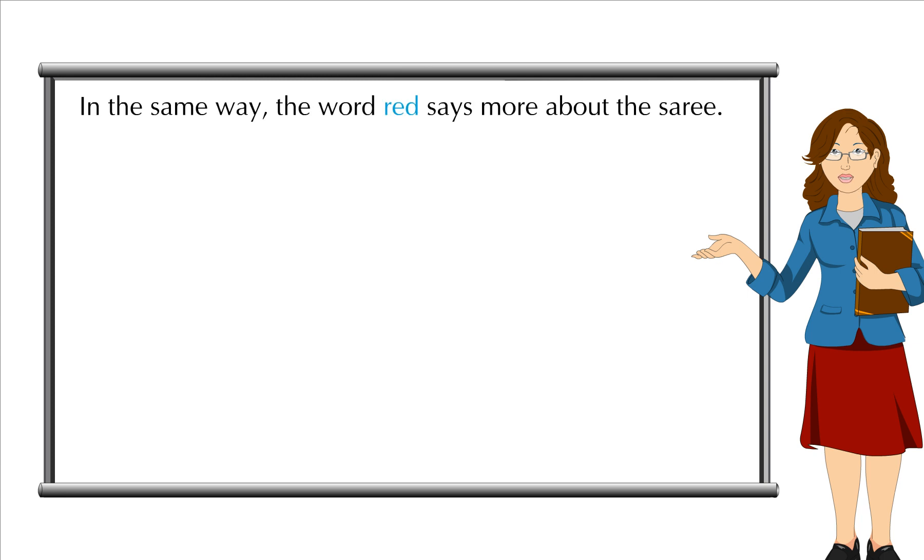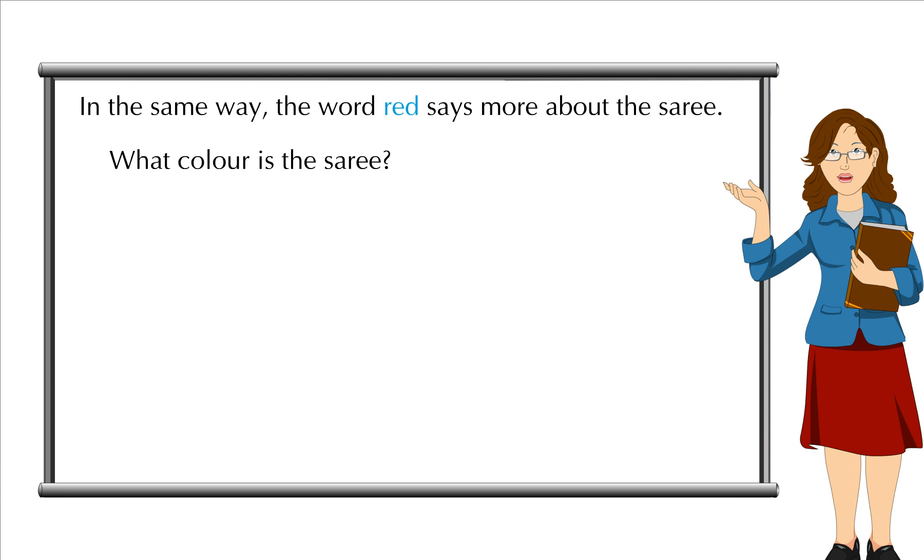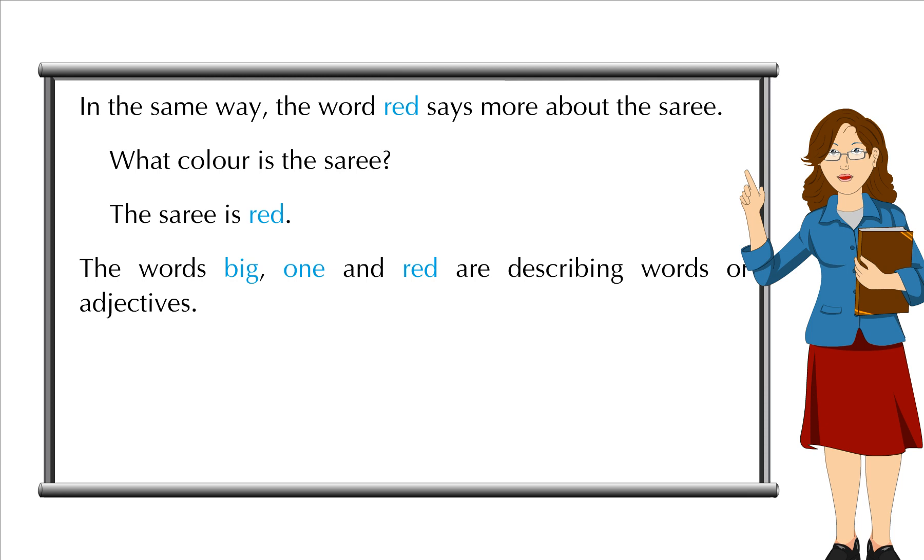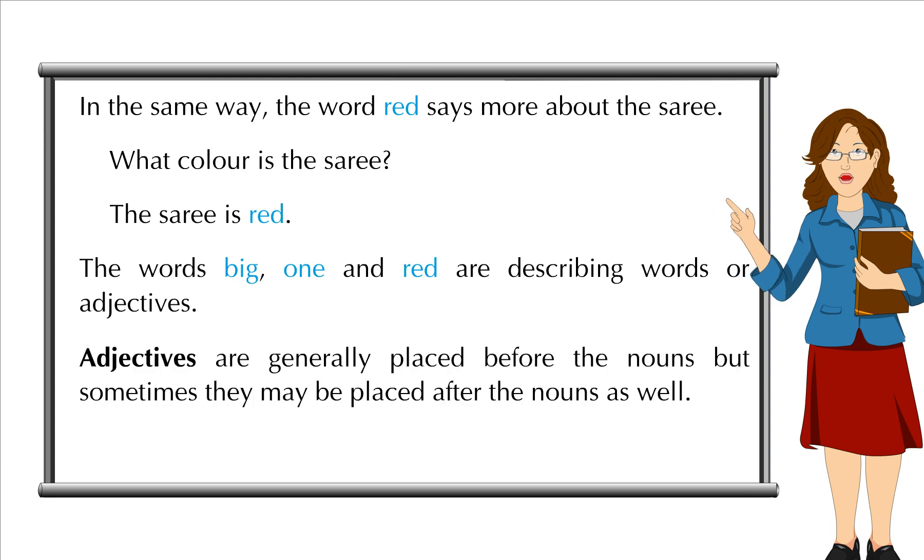In the same way, the word red says more about the saree. What colour is the saree? The saree is red. The words big, one and red are describing words or adjectives. Adjectives are generally placed before the nouns, but sometimes they may be placed after the nouns as well.